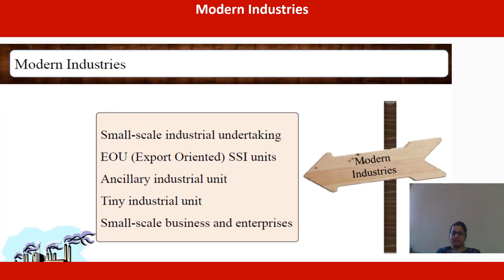In the modern small-scale industry, the first subtype is the small-scale industrial undertaking — an industrial undertaking where investment in fixed assets in plant and machinery, whether on ownership, lease, or hire purchase, should not exceed 10 million. The next is the export-oriented SSI unit, introduced in 1951. An export-oriented unit exports at least 30% of its annual production by the end of the third year of commencement of production, with investment not exceeding 10 million.